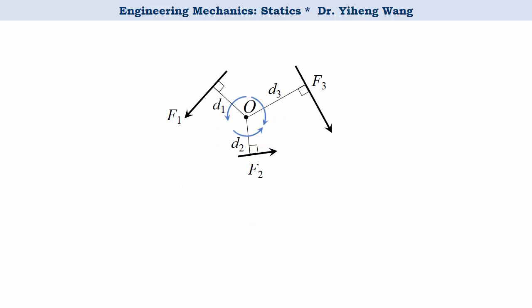Resultant moment caused by multiple forces can be determined by simply adding up the individual moment caused by each force about the same point. Like in this example, the total moment about point O equals F1 times its moment arm D1, plus F2 times D2, minus F3 times D3. Note that it's minus F3 D3 because F3 is creating a clockwise rotational effect about point O.